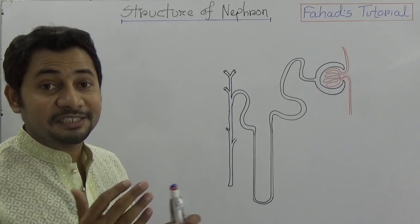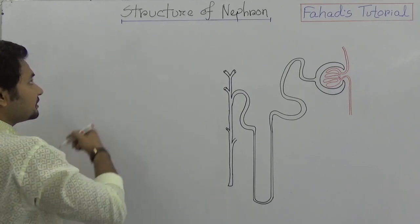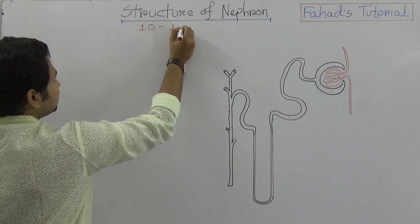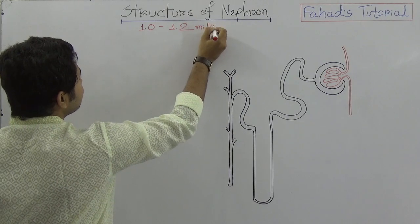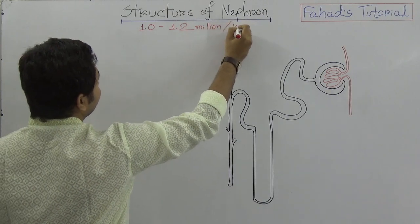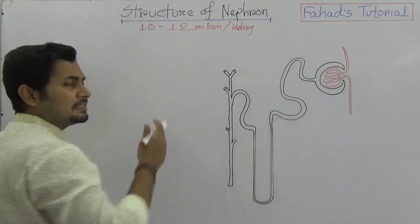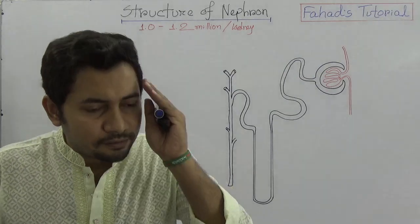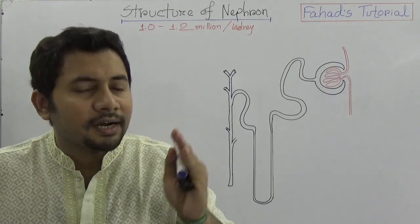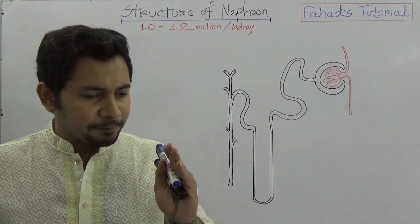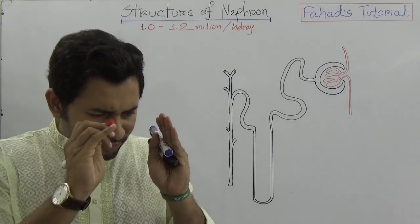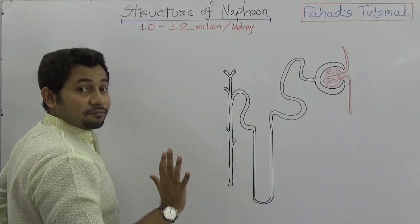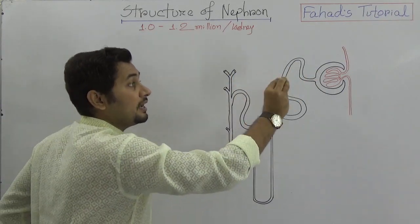First we need to know that each kidney contains about 1.0 to 1.2 million nephrons per kidney. To understand the function of this number of nephrons, we need to know the structure first, and we should visualize the process.